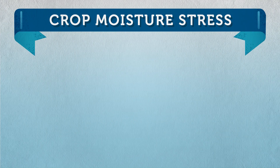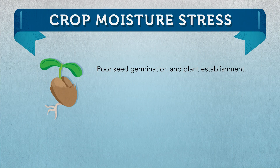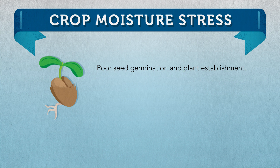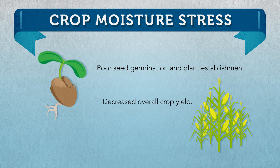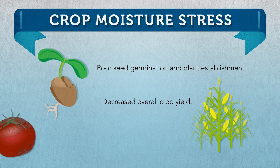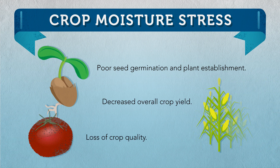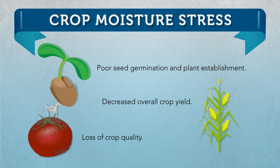Crop moisture stress can cause poor seed germination and plant establishment, decreased overall crop yield, and loss of crop quality.